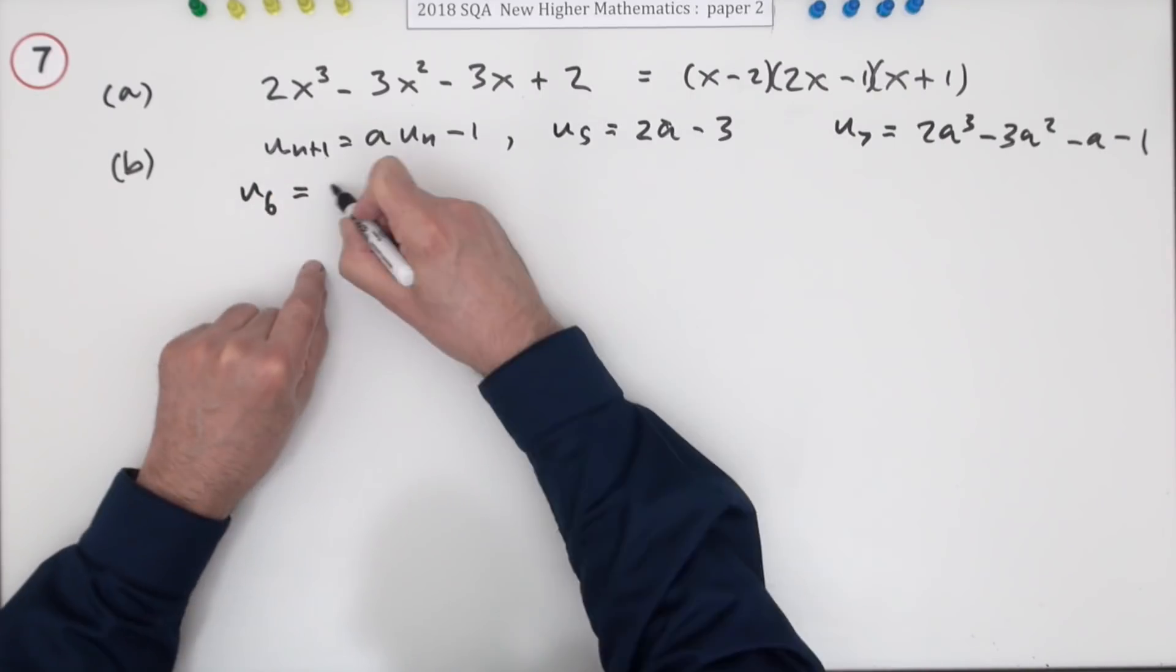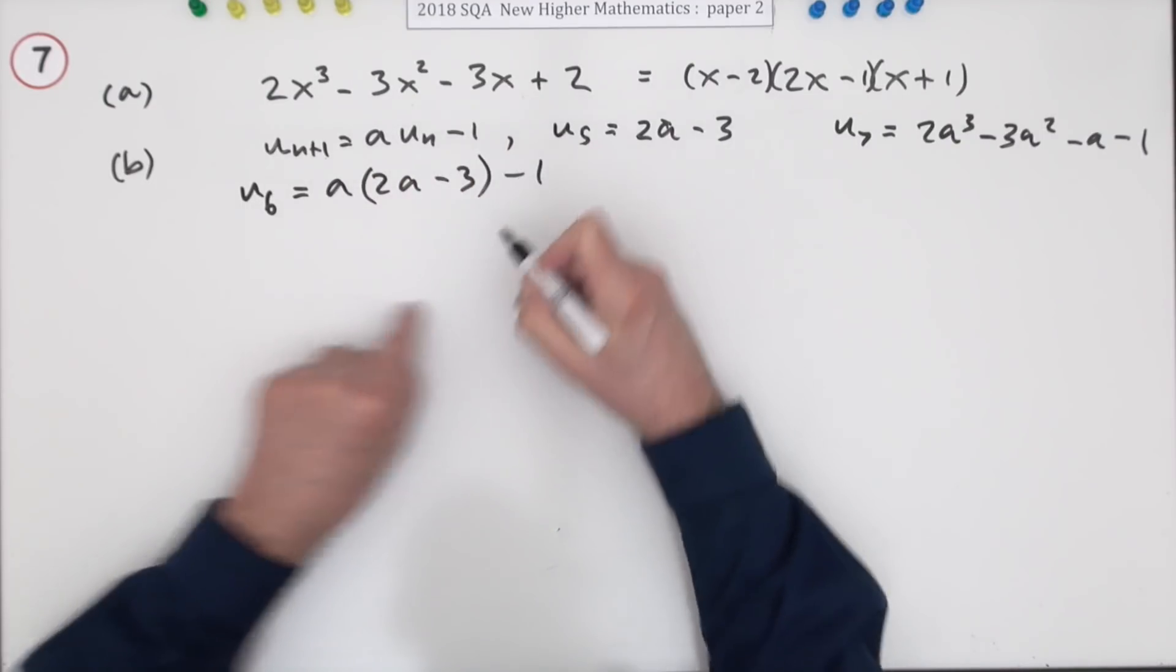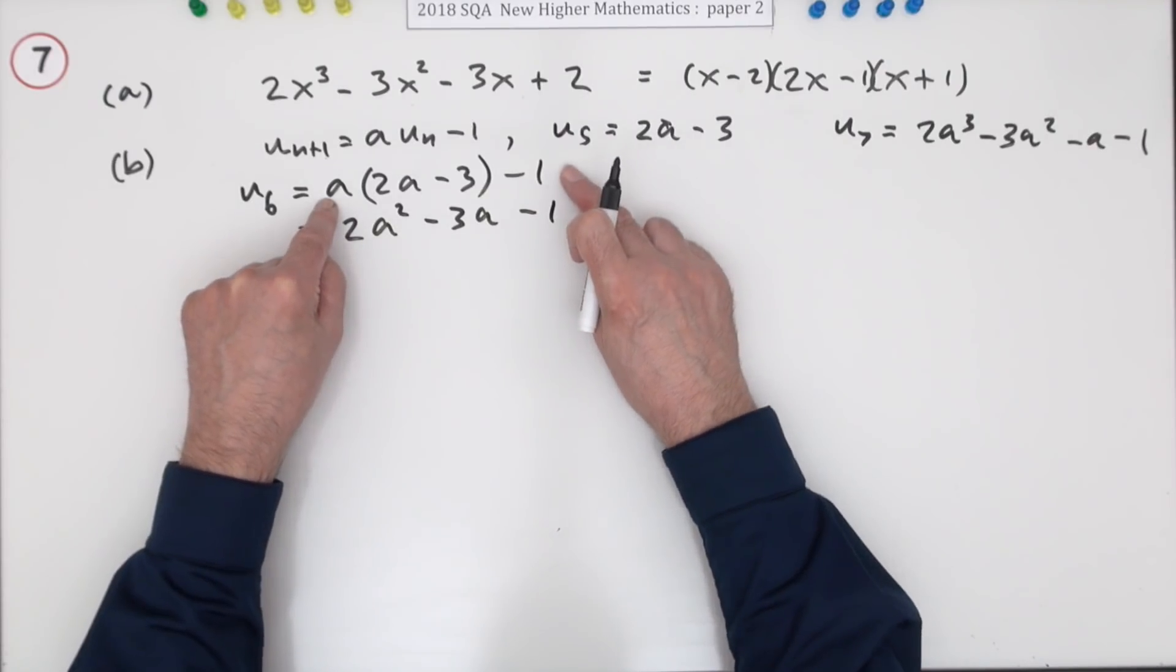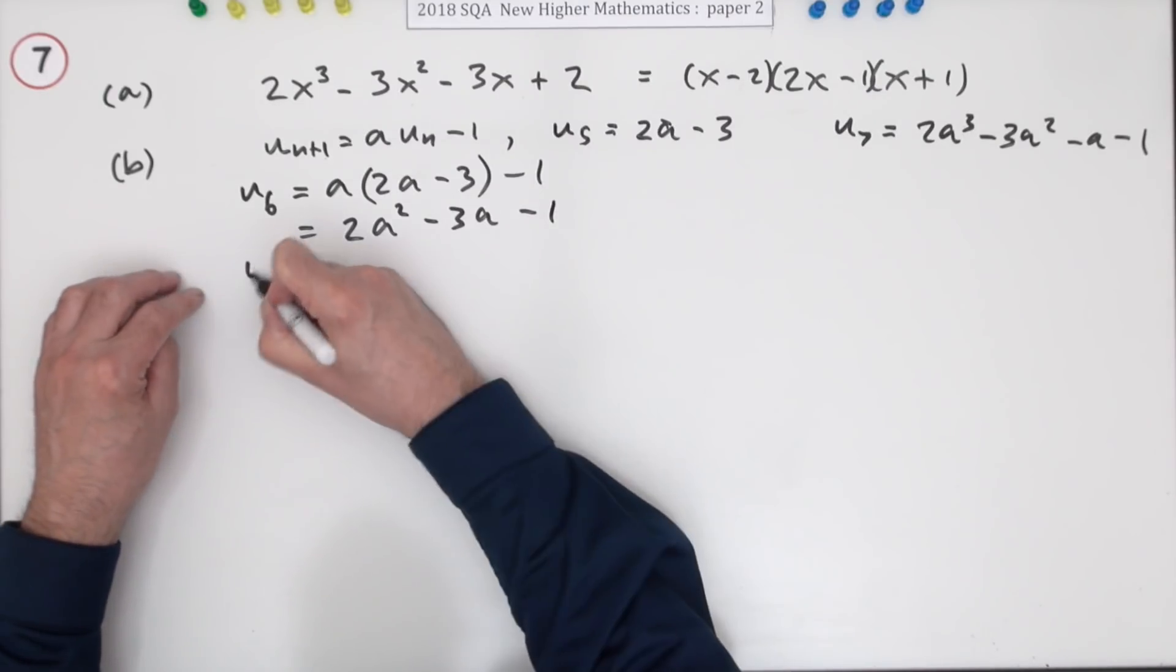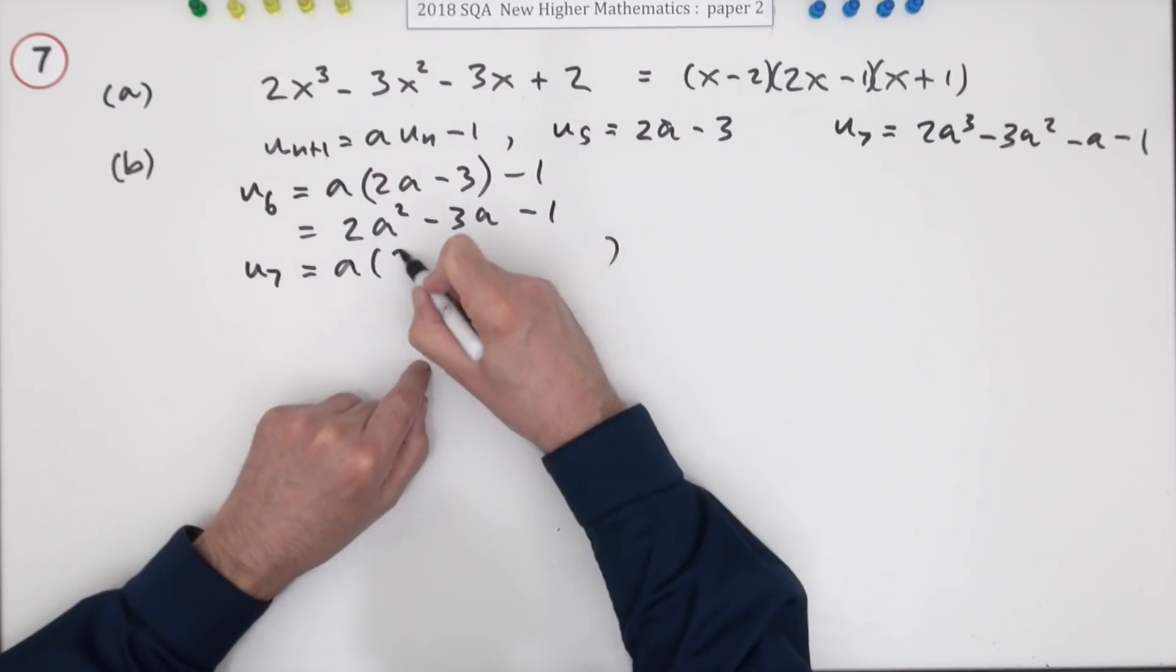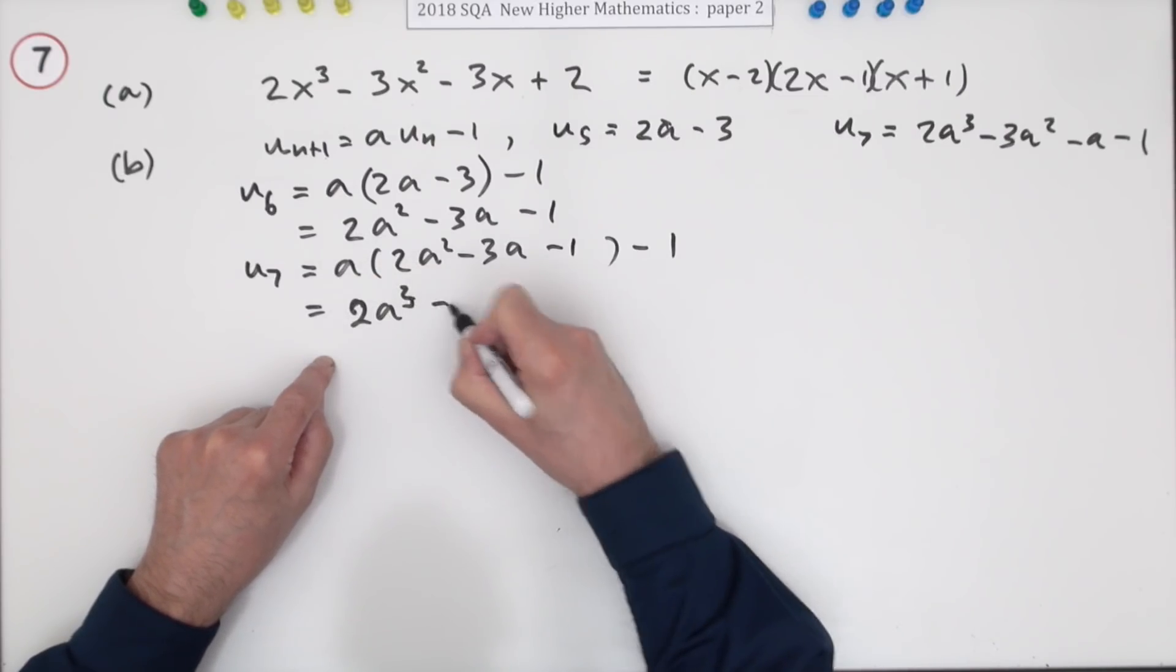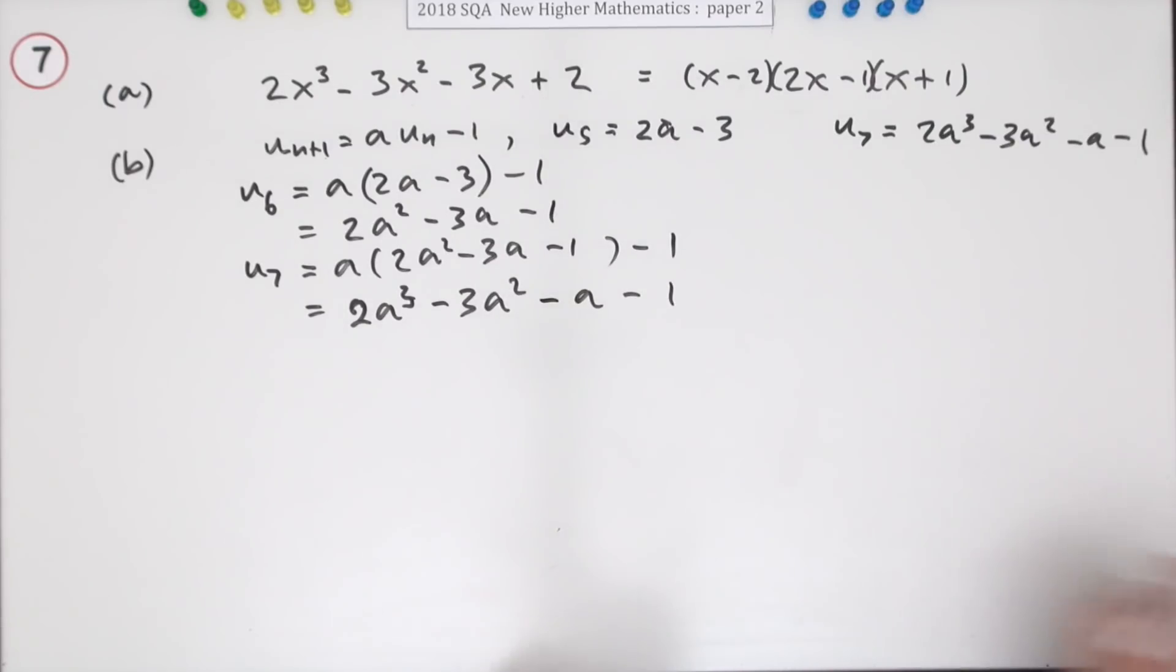So u6 according to this would be a times u5 which is 2a minus 3, take away 1. Multiply it out. 2a squared minus 3a minus 1. If you didn't multiply it out and then you did it for the second step you're just going to end up with a nested form which would be another synthetic table. Now you can get u7 by doing the same step again. a times u6. Take away 1. So that finally gives you 2a cubed minus 3a squared minus a minus 1 as required for one mark.